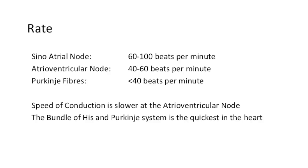The SA node sets the base rhythm of the heart between 60 and 100 beats per minute. If the SA node is absent, the AV node can beat independently at a rate of 40 to 60 beats per minute. If neither the SA node nor the AV node are present, Purkinje fibers can cause the heart to contract at a rate of less than 40 beats per minute.